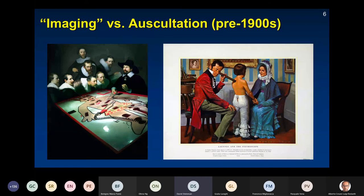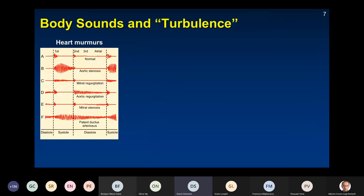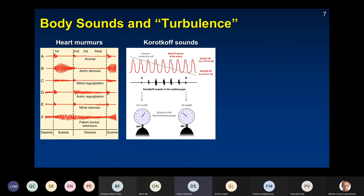Before the 1900s, there was a lot of work done on auscultation — listening to body sounds. This is a mid-20th century painting of Laënnec, who invented the stethoscope as one of the primary tools for listening to sounds from the body in a non-invasive manner. Most of you are probably aware that the body produces sounds — anyone who's gone to their doctor and had a stethoscope placed on their heart knows about heart murmurs and how those sounds can be used to diagnose cardiac disorders.